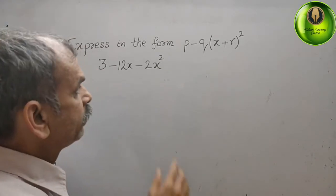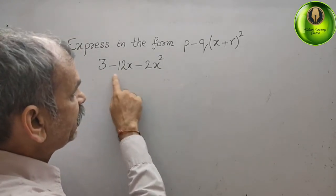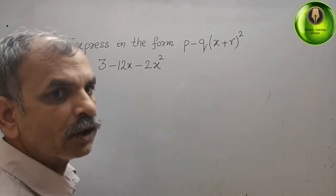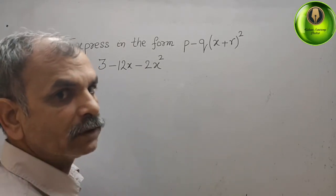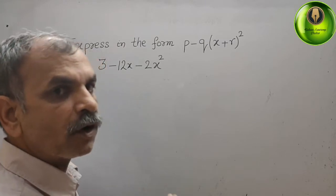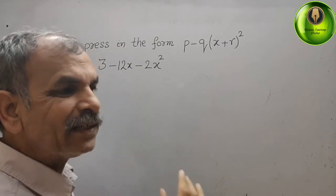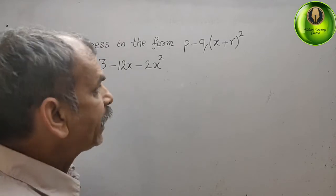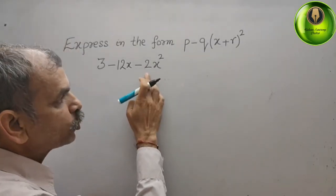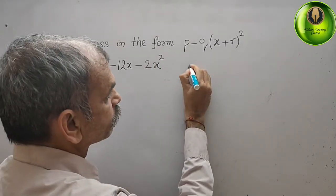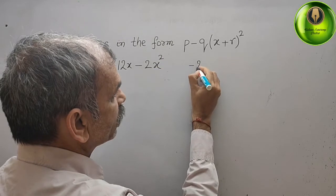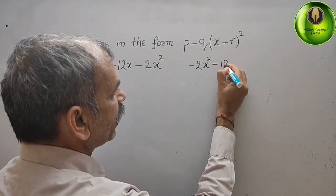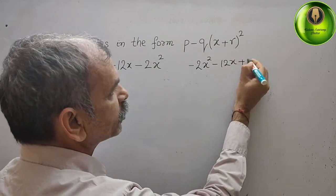How will we do it? First, you can see this expression is in decreasing order with the powers. Now we will rearrange it into our standard form — increasing order. That is: minus 2x square minus 12x plus 3.